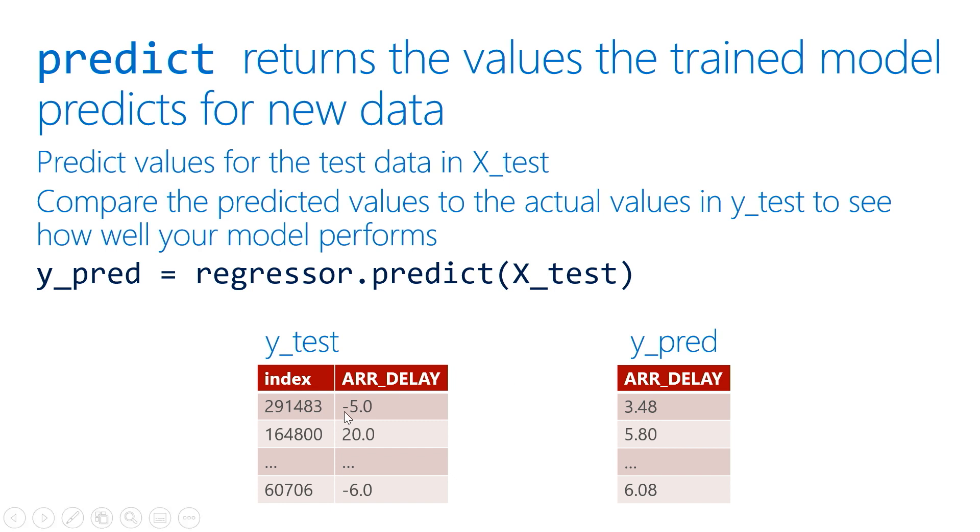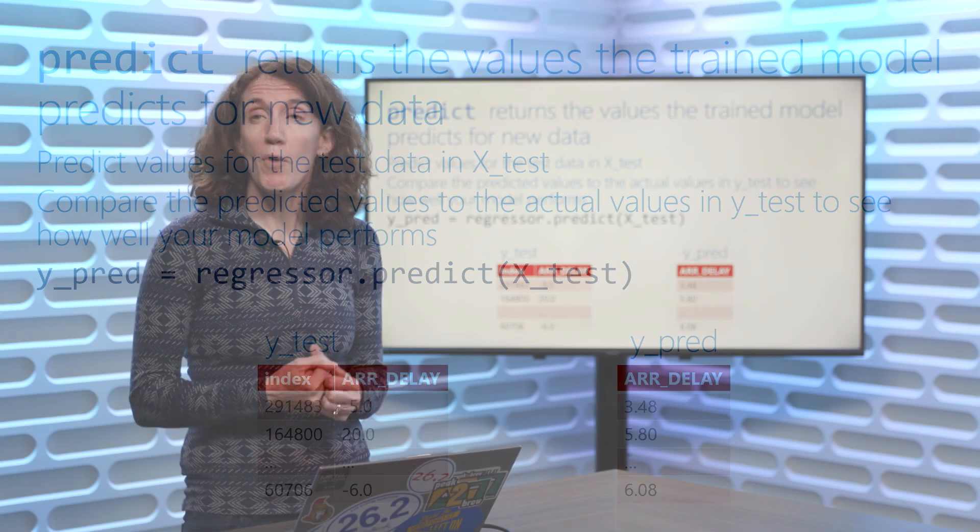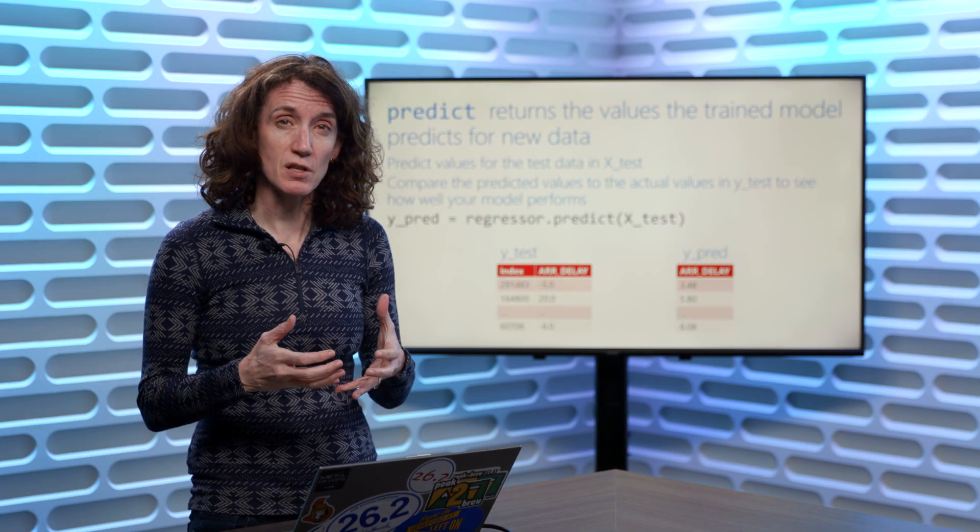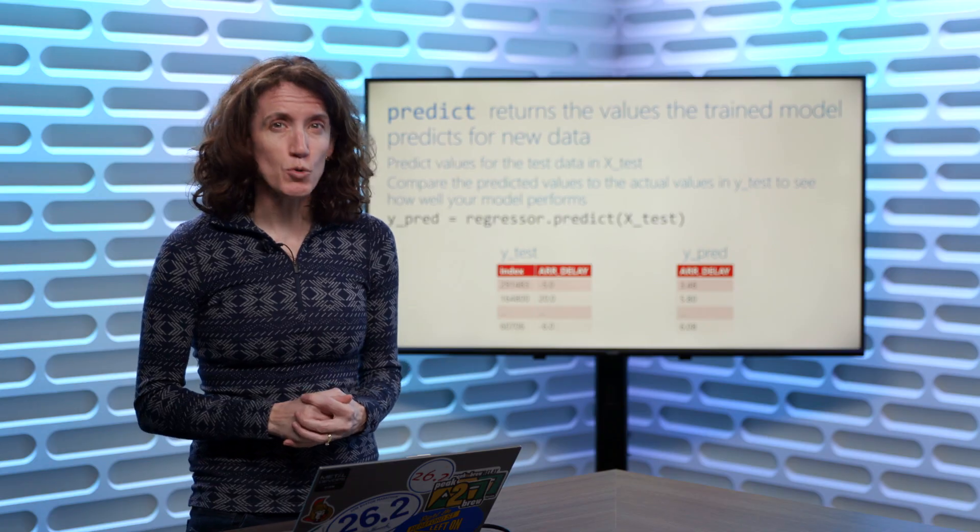By comparing, here we know the first row, the first flight was five minutes early, our model predicted it would be just over three minutes late. The second row, it predicted it would be 20 minutes late, our model predicted it would be about six minutes late, and so on. So now, we get a sense of whether our model is doing a good job making those predictions. Now, let's take a look at this in some actual code.